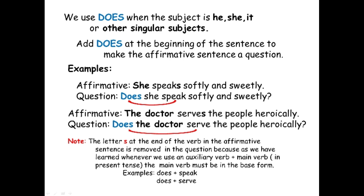Just like what we did using do — we place it before the subject to form the question. Here is our example: she speaks softly and sweetly. Now we use does at the beginning of the sentence, before the subject she. She is singular, so therefore she as a singular subject should use does. Take note: the question is does she speak softly and sweetly?